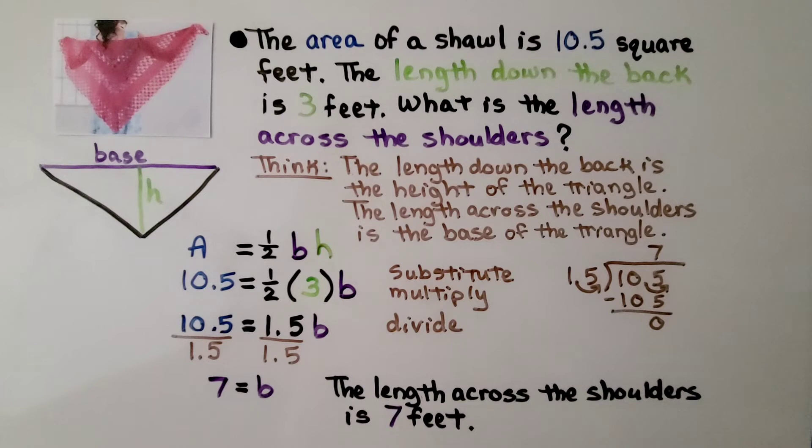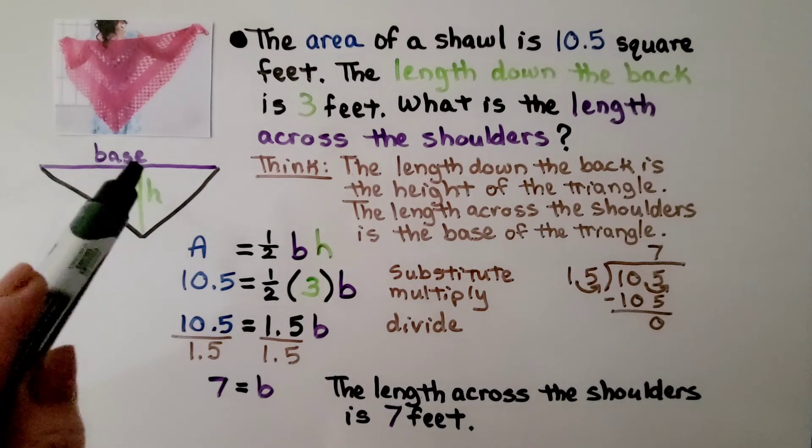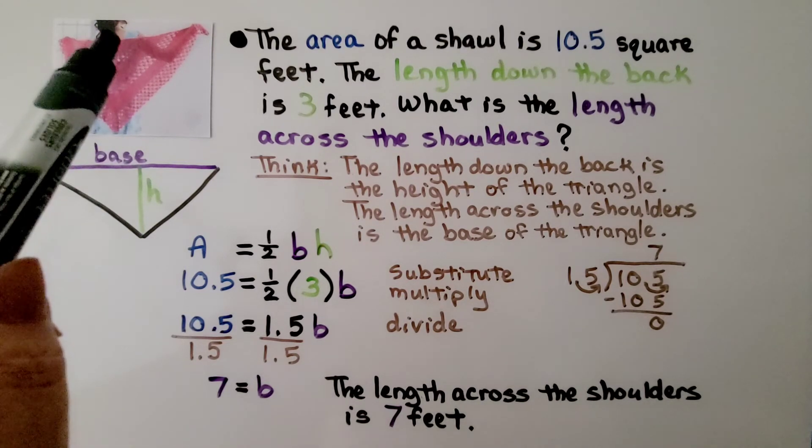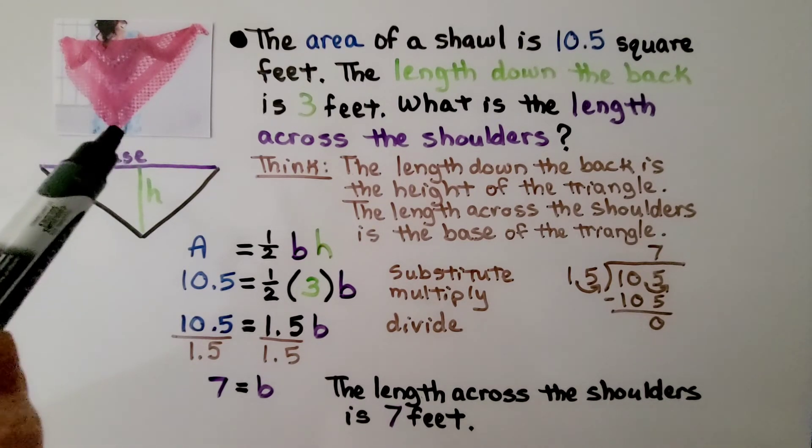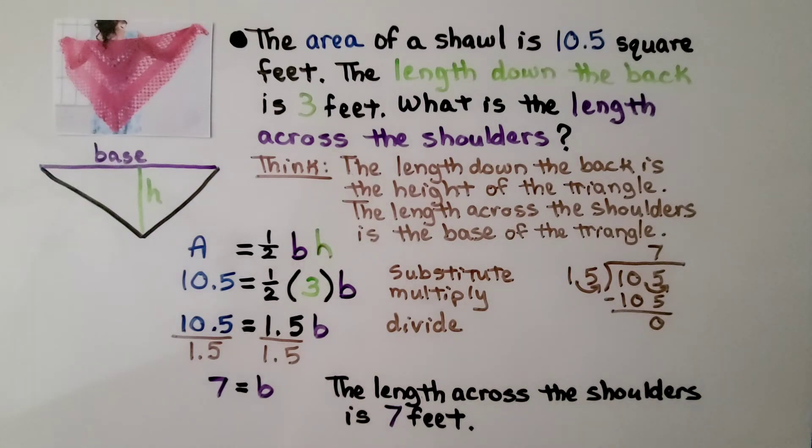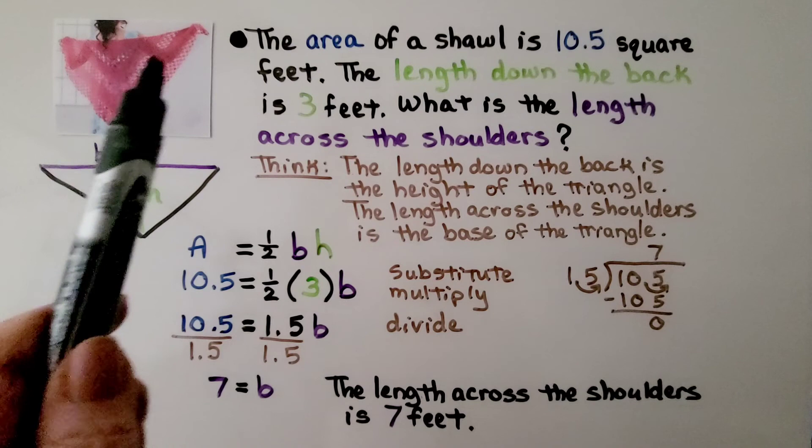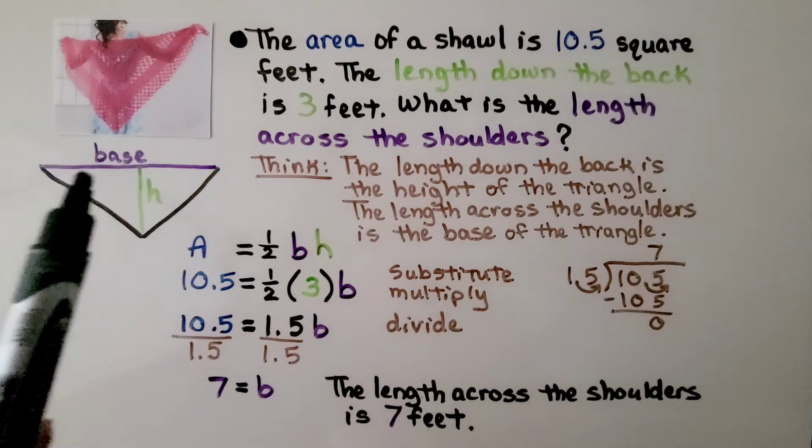The area of a shawl is 10.5 square feet. The length down the back is 3 feet. What is the length across the shoulders? We think the length down the back is the height of the triangle. That's going from this point to the vertex right here. And the length across the shoulders is the base of the triangle. The length across the shoulders is going to be this base.